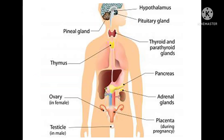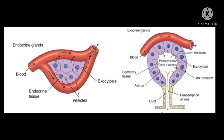Most hormones are secreted by special glands called endocrine glands, which means secreted internally. They are also called ductless glands because their secretions are poured directly into the blood and not through any special ducts. Exocrine glands are duct glands because they have ducts and do not pour secretions directly into the blood — they pour secretions through a duct. This is the major difference between endocrine and exocrine glands.